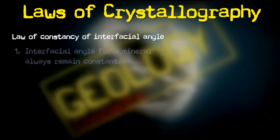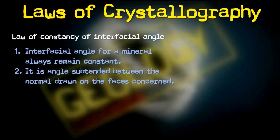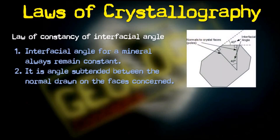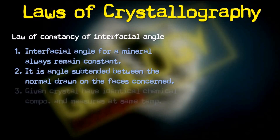The first law is the Law of Consistency of Interfacial Angle. This law states that the interfacial angle between the faces of a crystal remains constant. The interfacial angle in general is defined as the angle between two adjacent faces of a crystal, but in crystallography it is more precisely defined as the angle subtended between the normals drawn to the concerned faces. As you can see in this figure, both angles are equal, but the angle between the normals is technically taken to be the interfacial angle.